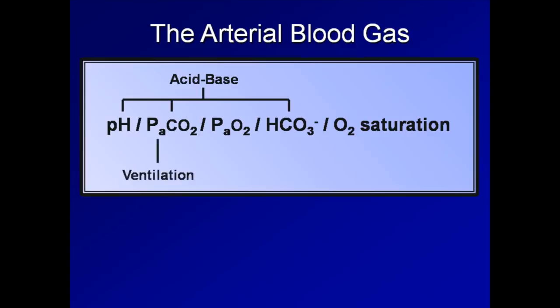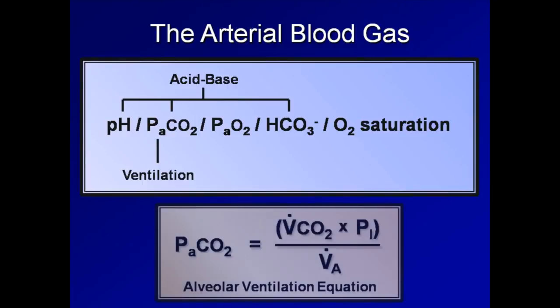Next, the PaCO2 alone tells us about the status of the patient's ventilation. It does this through the alveolar ventilation equation, which states that the partial pressure of CO2 in arterial blood is equal to the product of the rate of systemic CO2 production and pressure of inspired air divided by alveolar ventilation. Therefore, if the PaCO2 can be measured, the systemic CO2 production is usually assumed based on the situation, and pressure of inspired air is also known, then alveolar ventilation can be calculated. Alveolar ventilation is, in turn, determined by the respiratory rate, tidal volume, and dead space.